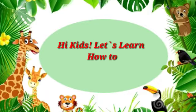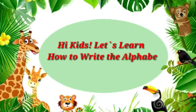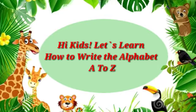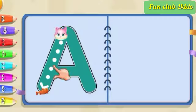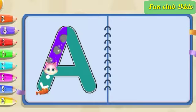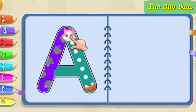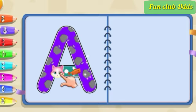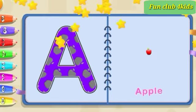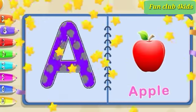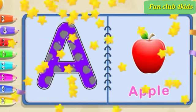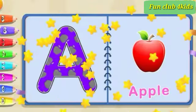Hi kids, let's learn how to write the alphabet A to Z. Slide down, slide down, across. A is for apple.